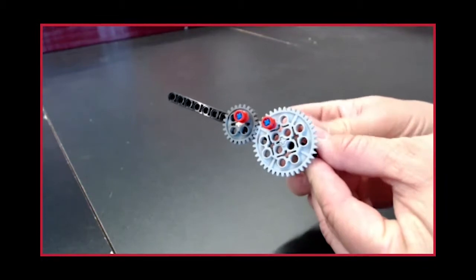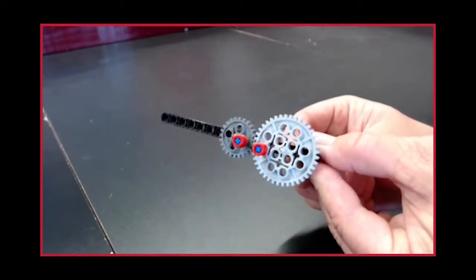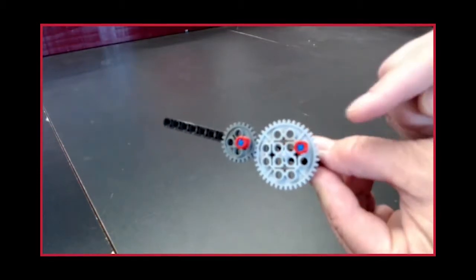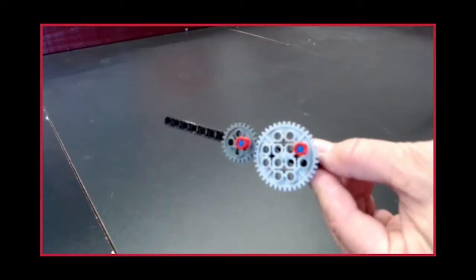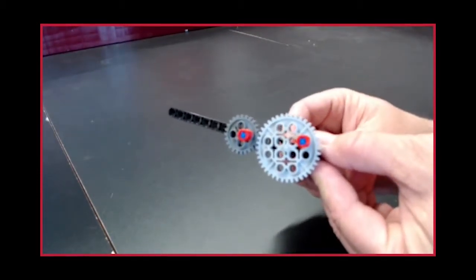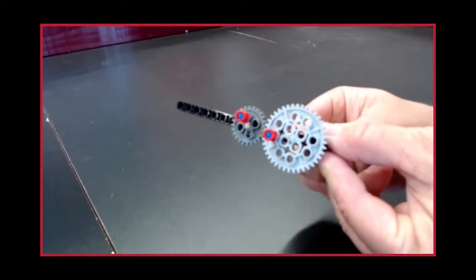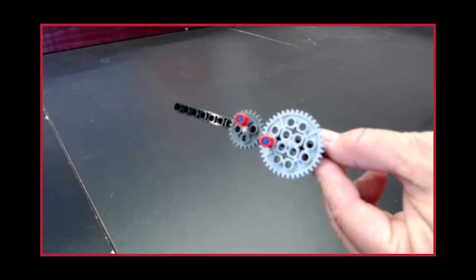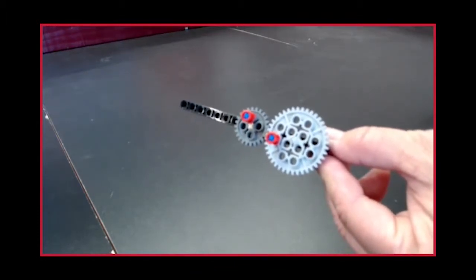Because the teeth move past each other one at a time, once the small gear has completed one full circle, the large gear has only completed just over half a circle. And once the large gear has completed a full circle, the smaller gear has moved around one and a half times or spun one and a half times faster.